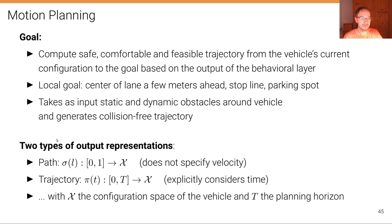The first output representation that could be predicted by a motion planner is a so-called path, which we denote here by sigma of l that maps a scalar from zero to one, which is the path length normalized to one, to the configuration space x. In other words, the path representation does not specify velocity, it just specifies the path that the vehicle should follow.